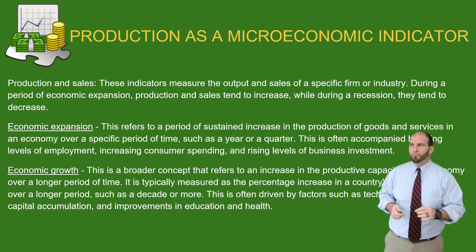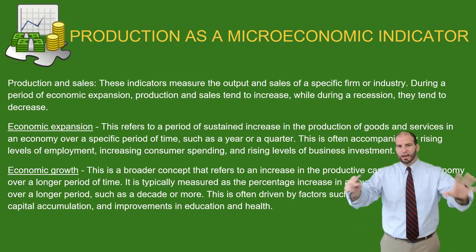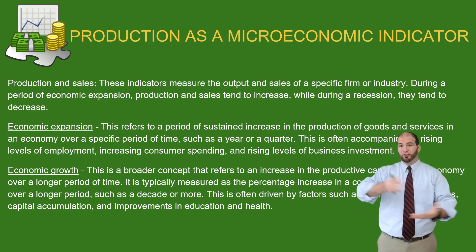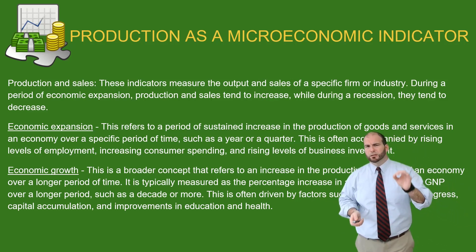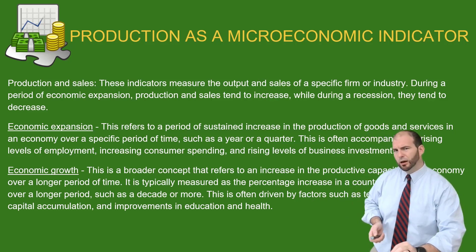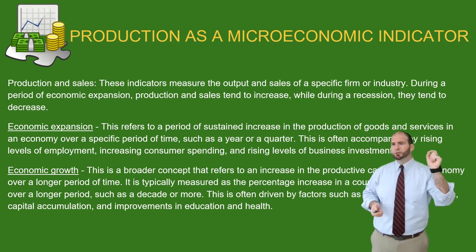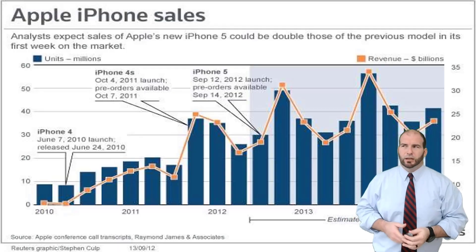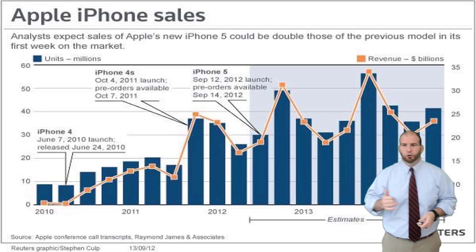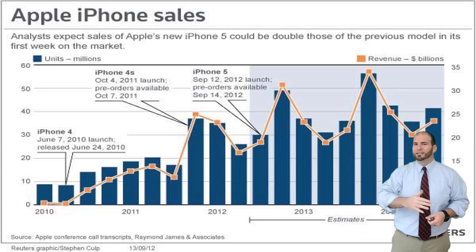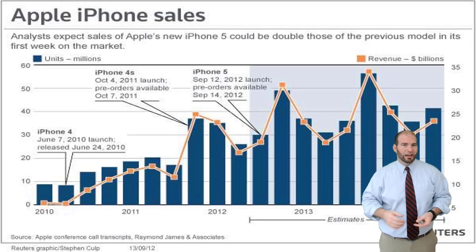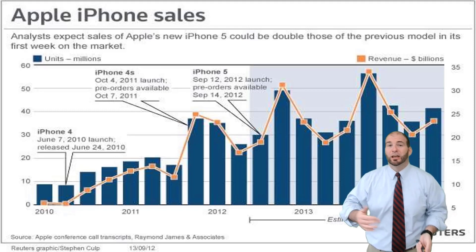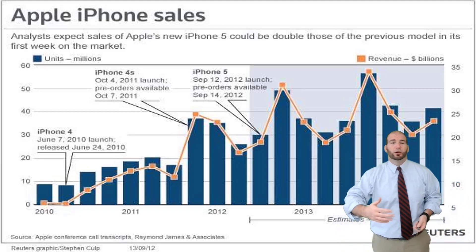Looking at economic indicators in the microeconomic phase of things, one of the biggest indicators is production. If a company is producing a lot, that is typically a good thing. If you're not producing a lot, that's typically a bad thing. The biggest indicator here is how much are you producing — can you keep up with demand? This is a picture of Apple iPhone sales. You would use microeconomic ideas to judge whether or not Apple is being successful, and a big part of that is its production. If a company is not increasing production over time, they're probably not growing.